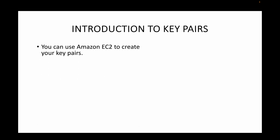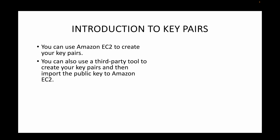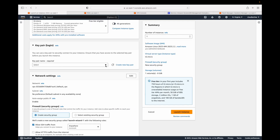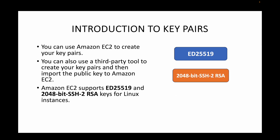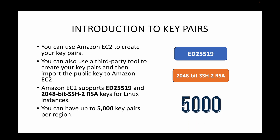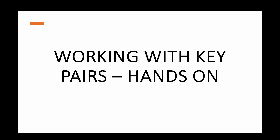You can use Amazon EC2 to create your key pairs, or use third-party tools like PuTTY to create them and then import the public key to EC2. EC2 supports two types of algorithms: ed25519 or RSA 2048-bit. You can create up to 5,000 key pairs per region. That's a lot of key pairs — and that concludes the introduction to key pairs.